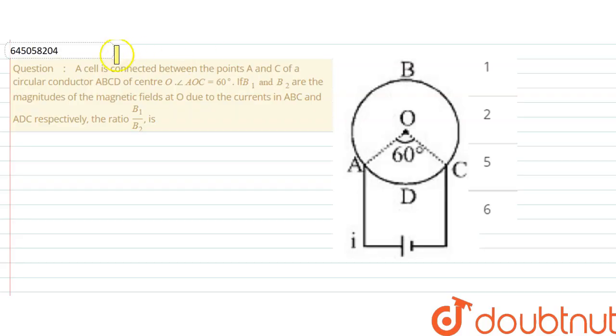The question says a cell is connected between the points A and C of a circular conductor ABC of center O, angle AOC 60 degrees. If B1 and B2 are the magnitudes of magnetic field at O due to current in ABC and ADC respectively, then find the ratio of B1 by B2.